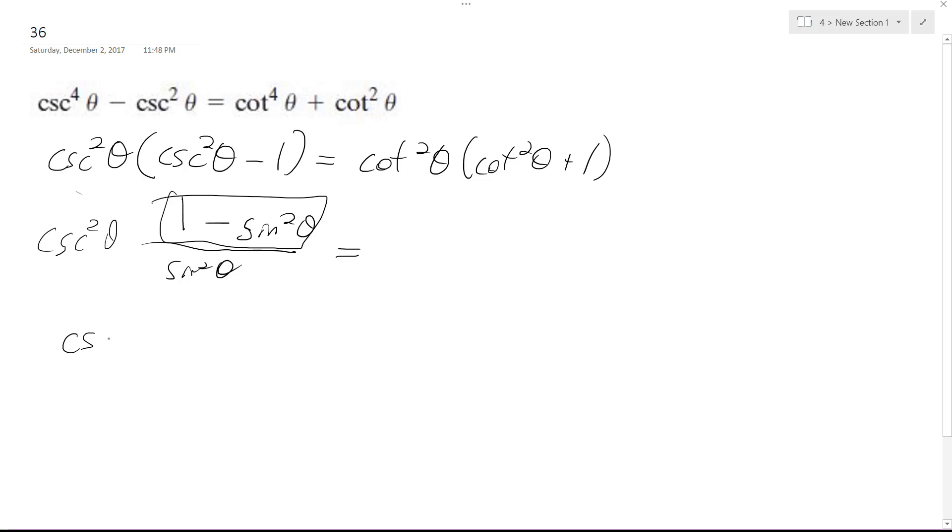So this becomes cosecant squared theta times, and then this becomes cosine squared theta over sine squared theta, and finally just write cosecant squared theta times cotangent squared theta.